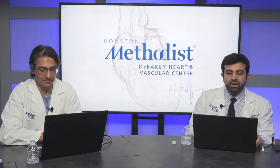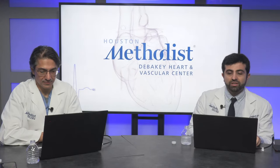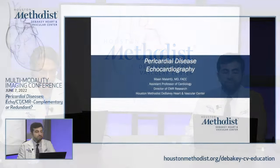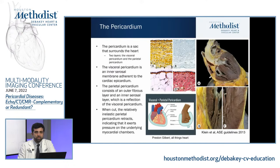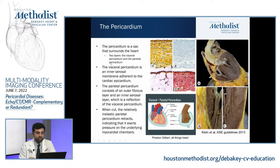Thank you Dr. Nabi, and I'm sorry everyone for the delay — we've had some IT trouble. I'll go a little bit faster in the interest of time. Today I'm going to talk about pericardial disease and echocardiographic assessment. To review the pericardial anatomy, think of the pericardium as a sac that surrounds the heart, created by someone trying to punch a hole into a balloon — creating two layers: the visceral pericardium and the parietal pericardium.